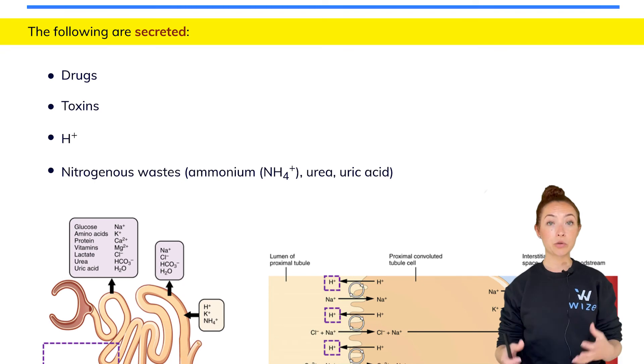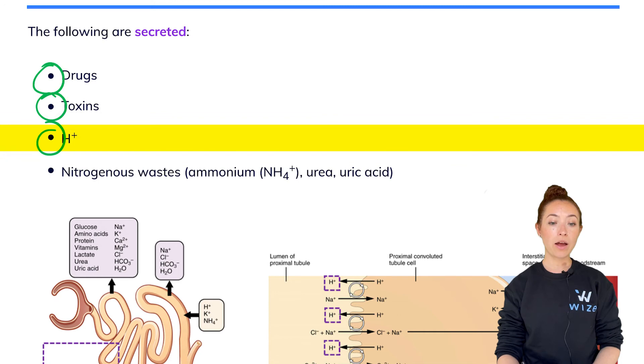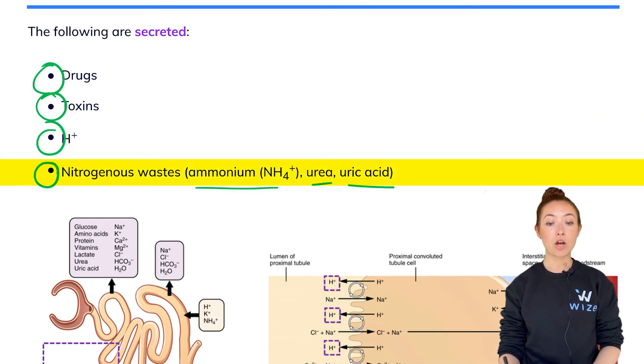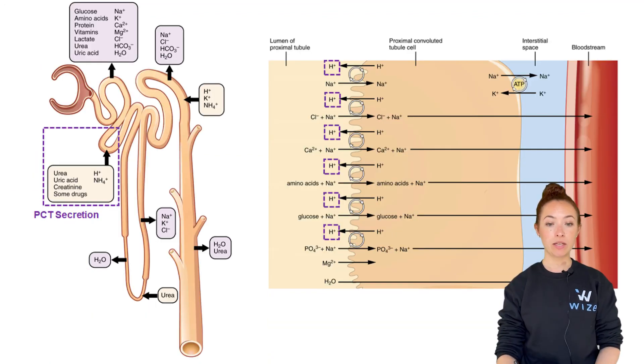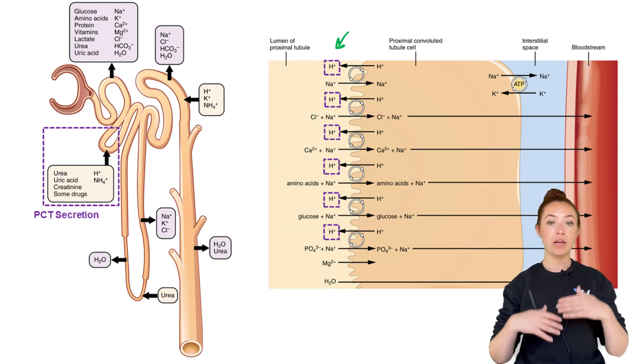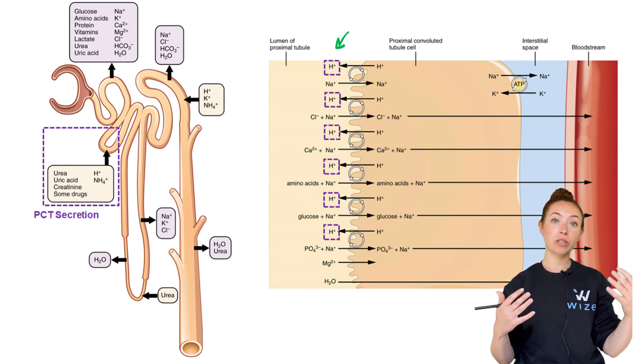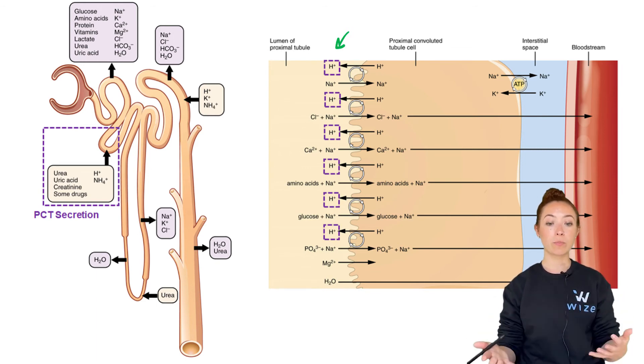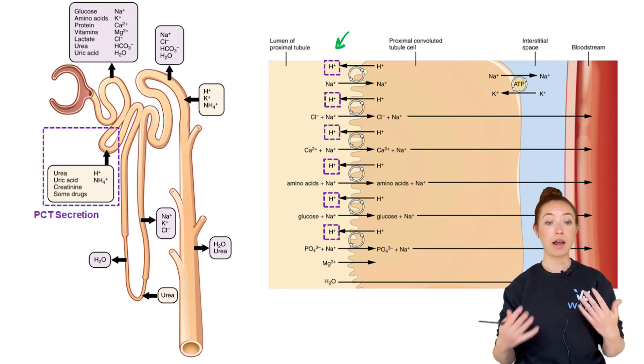The following things are actually secreted by the PCT: things like drugs and toxins, protons and nitrogenous wastes, including ammonium, urea and uric acid. Those are things that our body is trying to get rid of. So they're secreted into the filtrate so that we can get rid of that. We see the example of protons here. Some of the other things are not depicted and sometimes they happen at different levels of the PCT, such as the early PCT versus later PCT. So that's why they're not all depicted on the same image. But don't worry about those details for the MCAT. Just appreciate that a lot of things are secreted at this point.